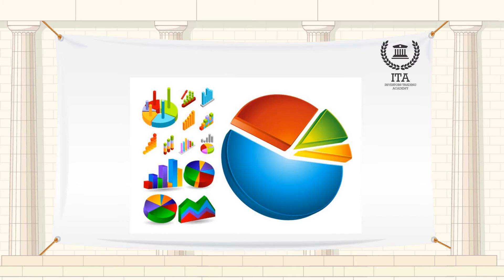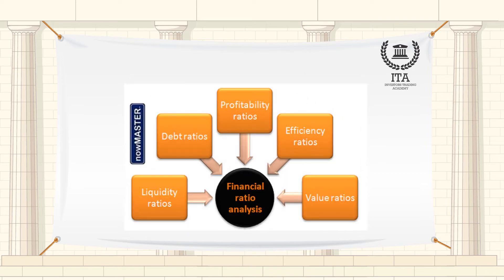Ratio analysis is a form of financial statement analysis that is used to obtain a quick indication of a firm's financial performance in several key areas. The ratios are categorized as short-term solvency ratios, debt management ratios, asset management ratios, profitability ratios, and market value ratios.